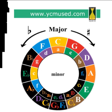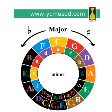This circle of fifths is made with the major circle of fifths and the minor circle of fifths. Because of this configuration, it is easy to see the thirds, both major and minor, and derive all of your root position triads.